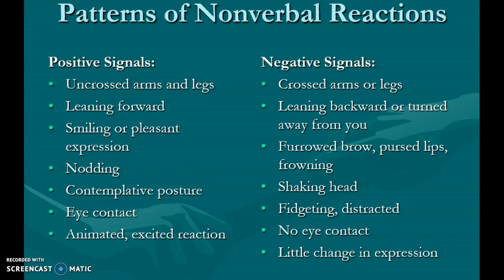Positive signals include uncrossed arms and legs, leaning forward, smiling or pleasant expression, and nodding. Negative signals include crossed arms or legs, leaning backward or turning away, furrowed brow, pursed lips, and frowning.